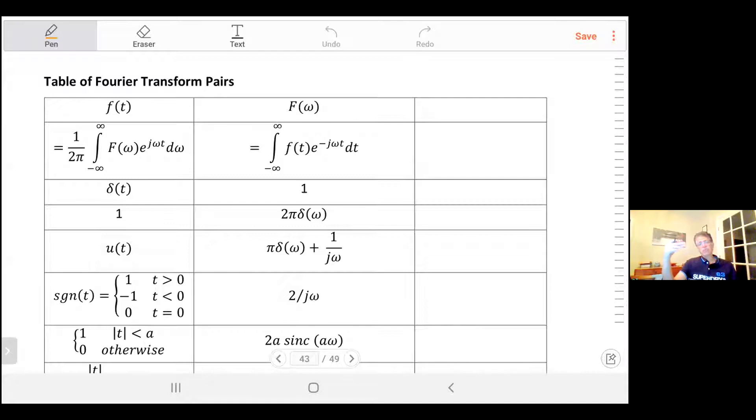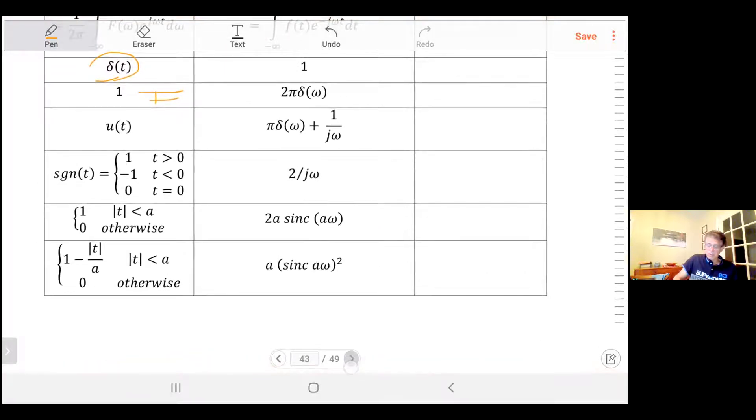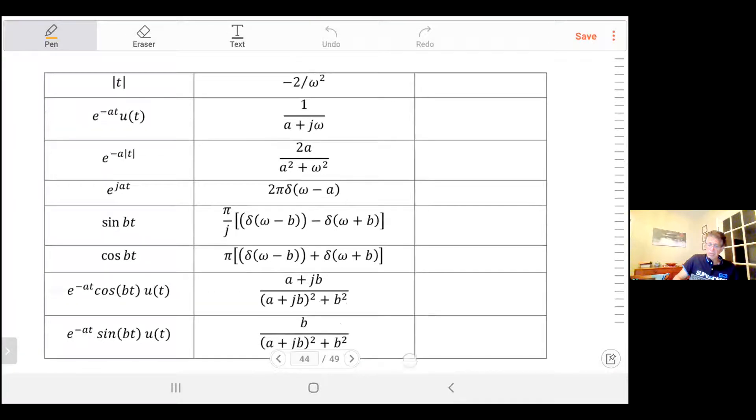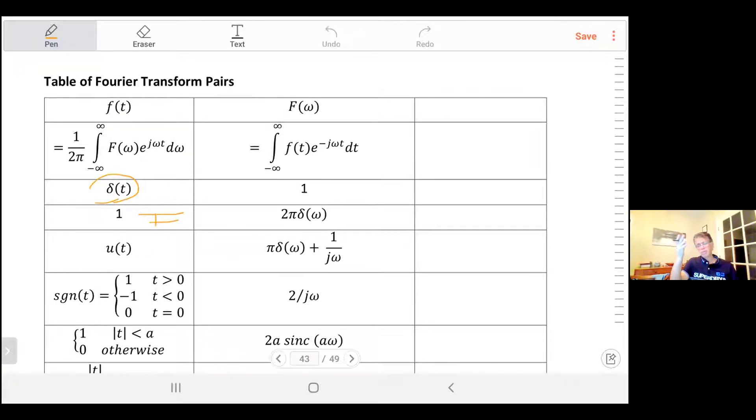To use something called Fourier transform pairs, as you see here in front of you on the table. They already did for many common signals the Fourier transform and put it in the table. For example, you have the impulse function delta and its Fourier transform is equal to one. If you have a signal which is constant equal to one all the time from minus infinity to infinity, the corresponding transform would be 2π times delta of omega. There are many functions in the table.